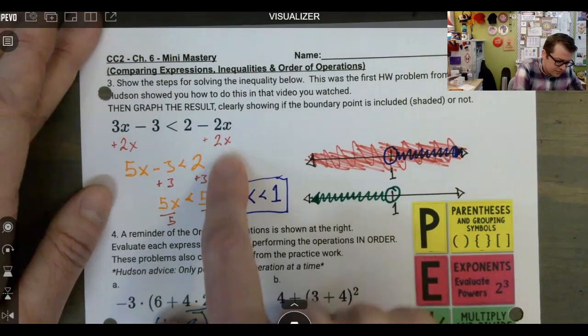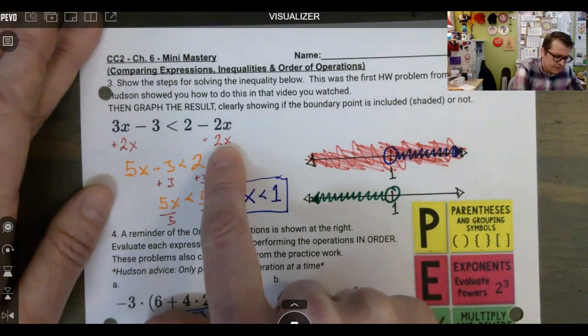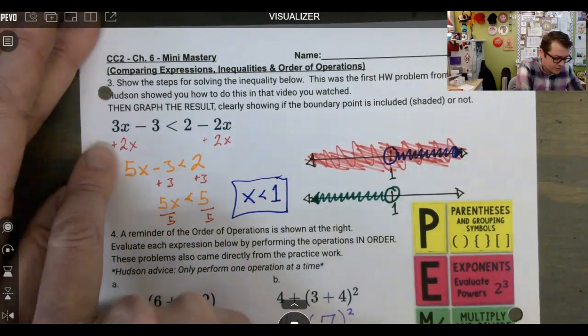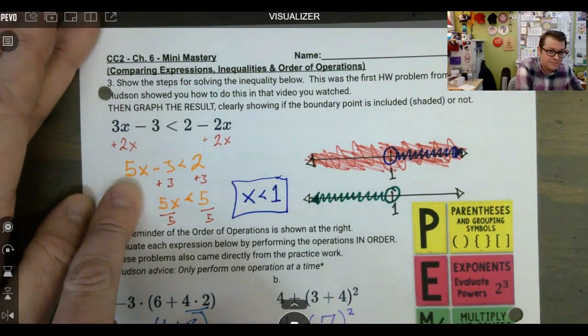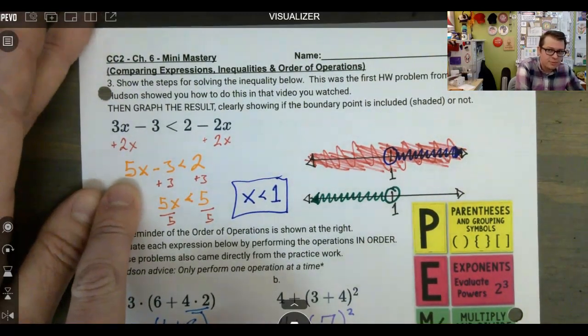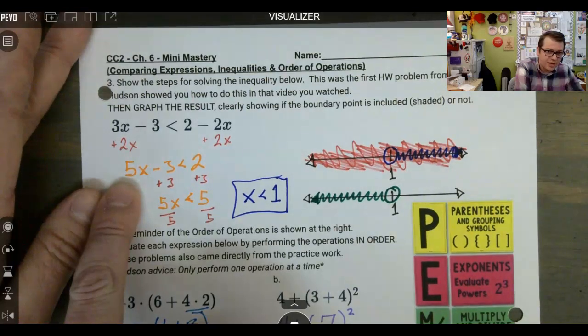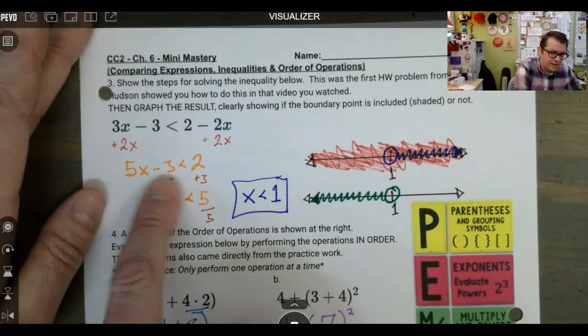So if I bring in positive 2X, that would cancel out on the right side and just add with the left side. So now I would have 5X. So now essentially all of my X's have moved to the left side of the mat.